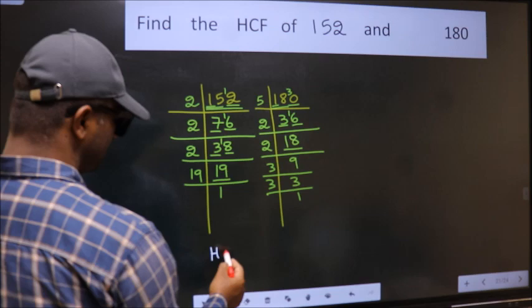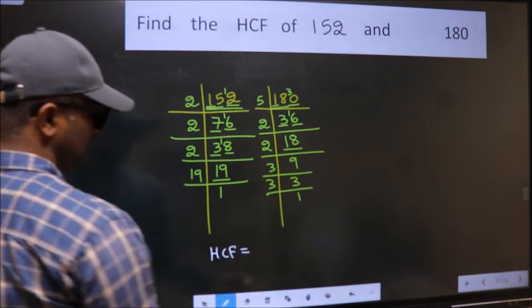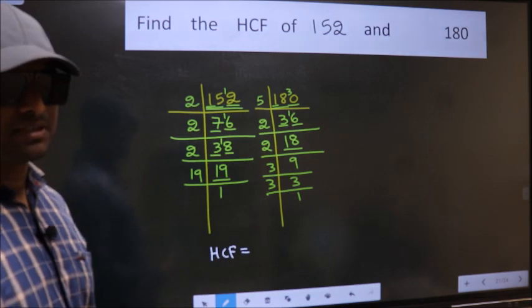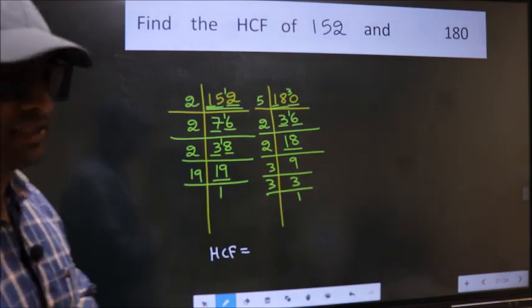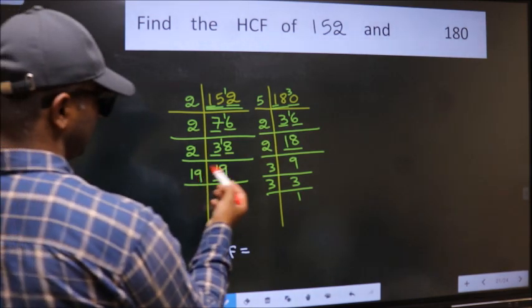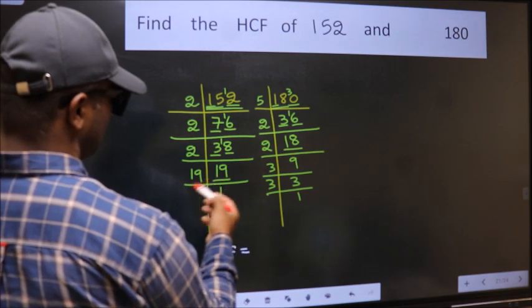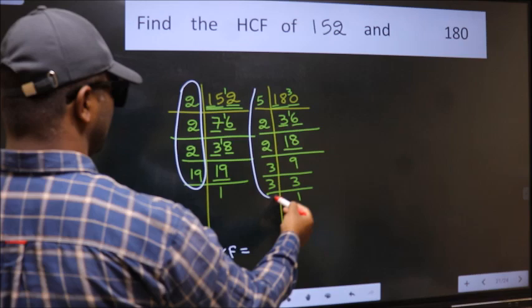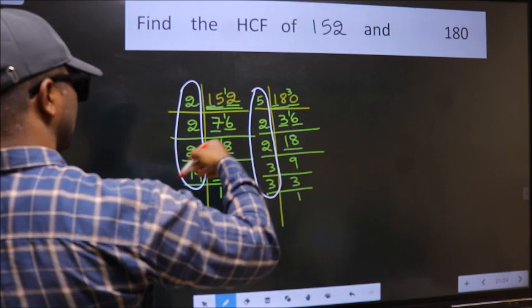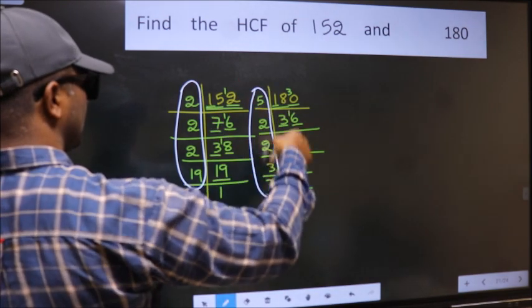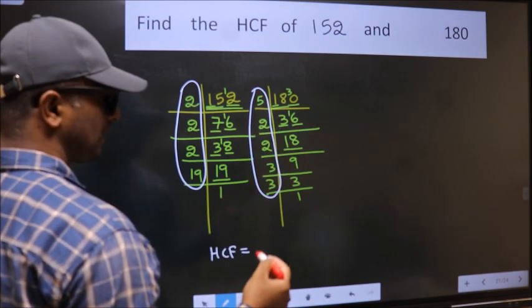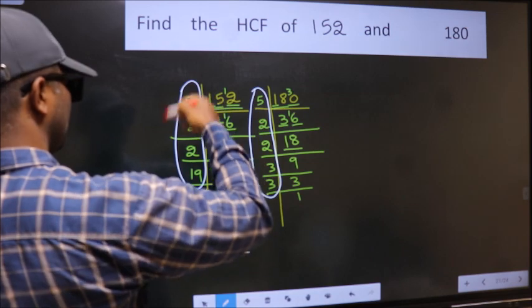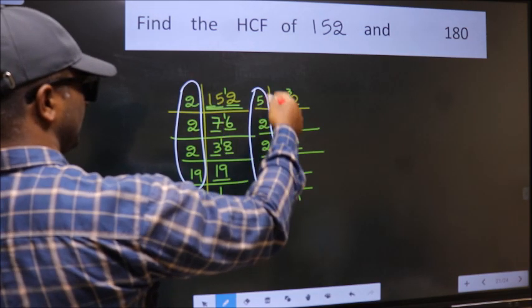Therefore, our HCF is the product of the numbers which are present in both these places. That is, here and also here. Here and here. So now, let us find the numbers which are present in both places.